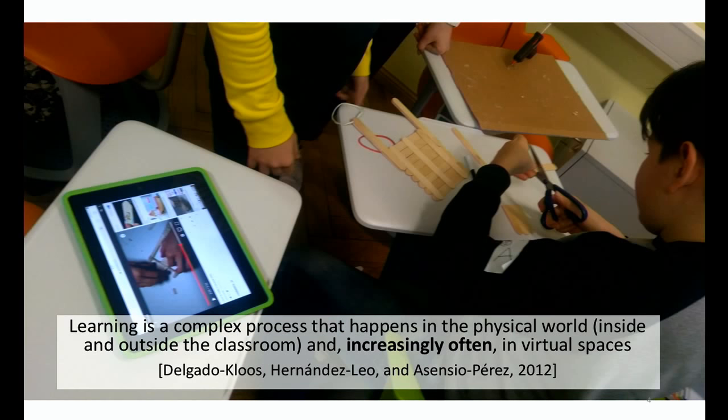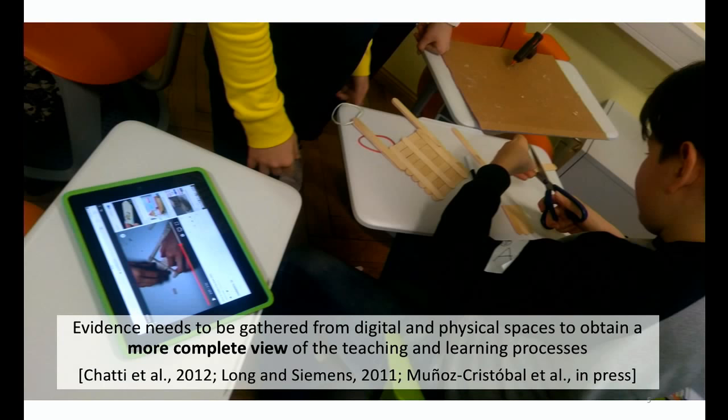I like the idea some colleagues were pushing — that we are too attached to the digital parts of learning. Learning is mainly happening in the physical world, and the digital part is increasingly more present, but it's not the main part. So if learning is so much happening in the physical world, why are we sometimes only looking at the digital part of it?